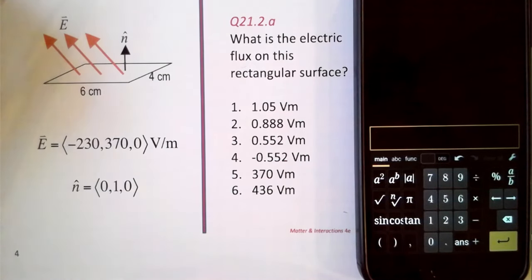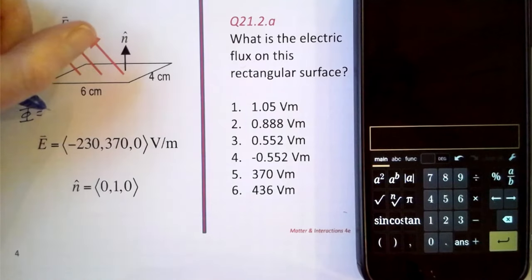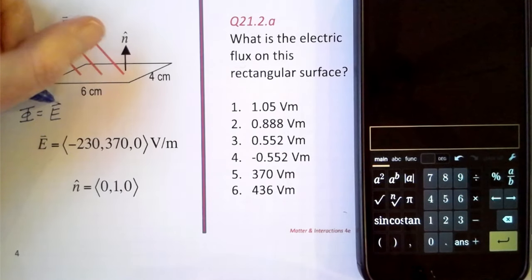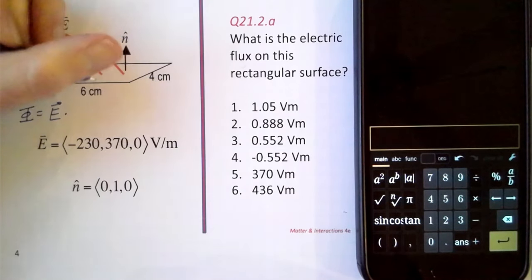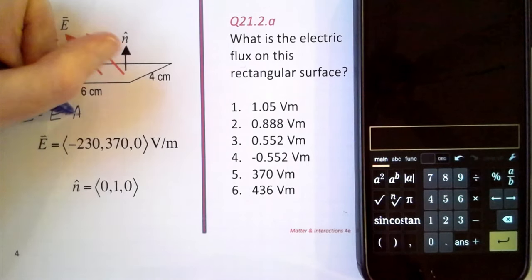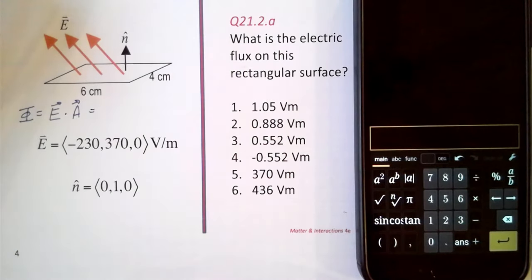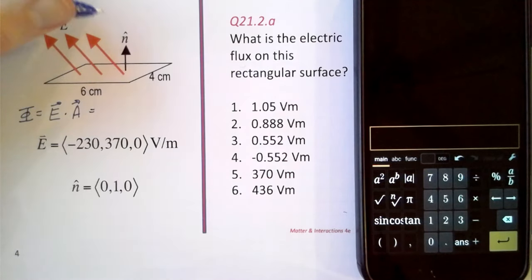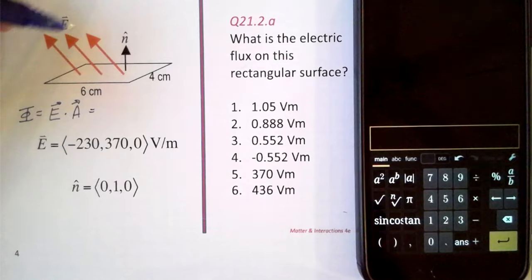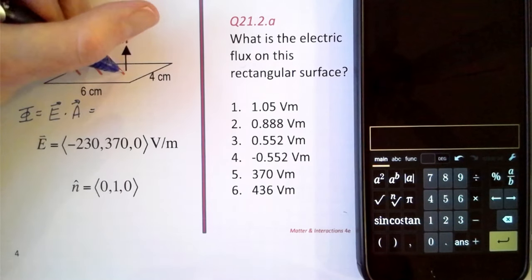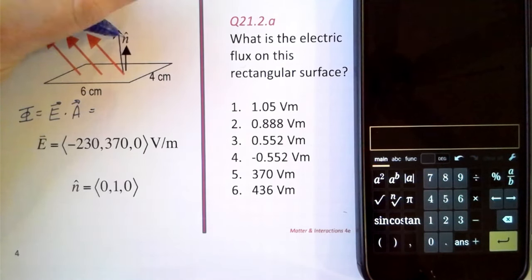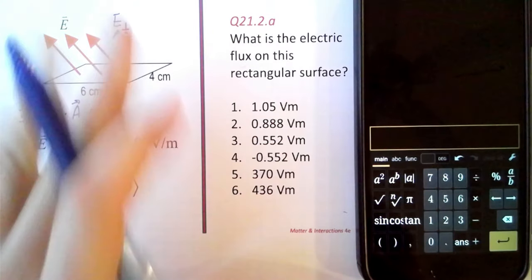So when we do electric flux, it's going to be the electric field times the area. And in this case, we also have to remember that we want the perpendicular component of the electric field. That's what matters because that's what's poking through the surface.